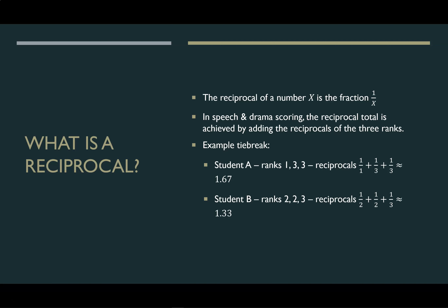Even if you're tabbing on paper. The way this works is, for instance, if we have two students tied with seven ranks — student A has a 1-3-3, student B has a 2-2-3. Student A's reciprocals would be 1/1, 1/3, and 1/3, which adds to about 1.67. Student B would have 1/2, 1/2, and 1/3, which adds to about 1.33. So student A would have a higher reciprocal score and would be ranked higher than student B.